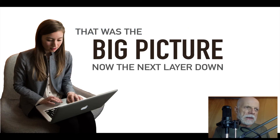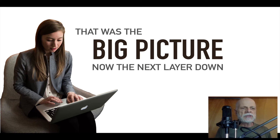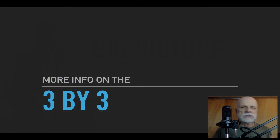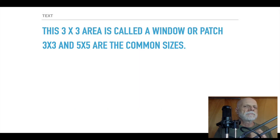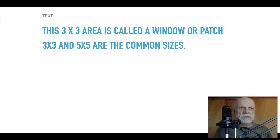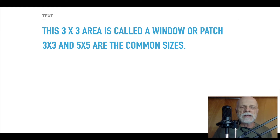So that was the big picture of what CNNs are — layers where you're not looking at the full previous layer, but just a small patch of it. Let's go into a bit more detail on that 3 by 3. It doesn't have to be 3 by 3 — it's just a very common dimension. That's called a window or a patch. Three by three and five by five are pretty much the common sizes for image classification.